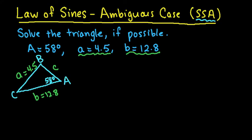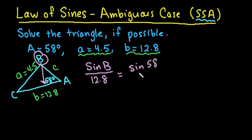So we don't know if it will work out until we actually start working with the problem. So what we're going to do in this case, I don't know angle B and I don't know angle C. So I'm going to start with angle B since I know the side opposite of it. So using the law of sines: sine B over 12.8 equals sine 58 degrees over 4.5.